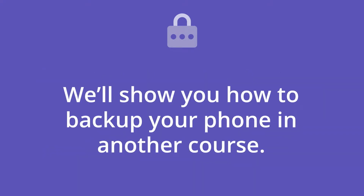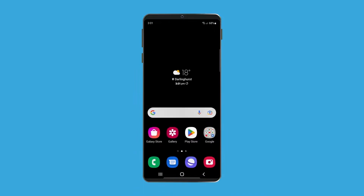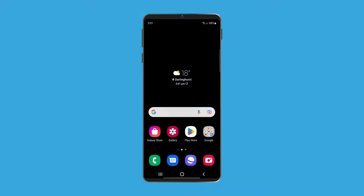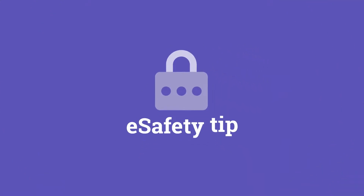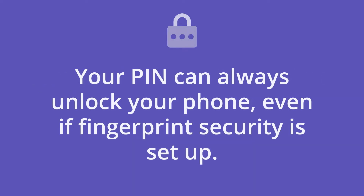We'll show you how to back up your phone in another course. Once you've entered the PIN correctly, your phone is unlocked and ready to use. Now let's look at how you can use your fingerprint instead of a PIN to unlock your phone. It's called fingerprint security and it's easy to set up. Fingerprint security can be a faster and more convenient way to unlock your phone, but you will still need a PIN to keep your information secure. Your PIN can always unlock your phone, even if fingerprint security is set up.